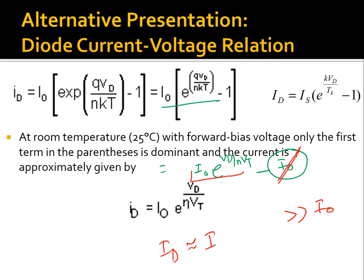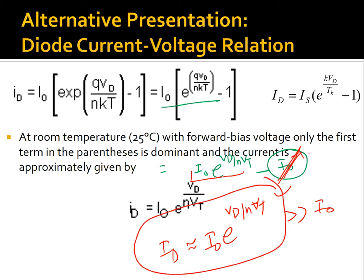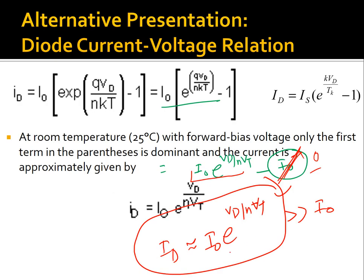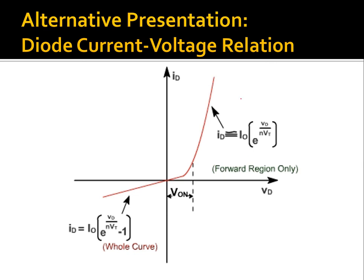In the forward bias region, the forward bias current is much, much larger than the reverse bias saturation current. Therefore, we can approximate the diode current as I_D ≈ I₀ · exp(V_D / n·V_T), since the I₀ term becomes approximately zero or very small. This simplified relationship applies in the forward bias region of the diode, and the total curve can be approximated using only the forward bias current component.